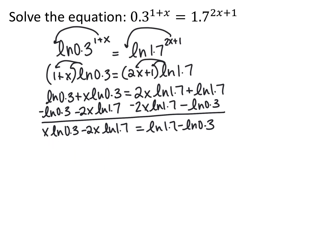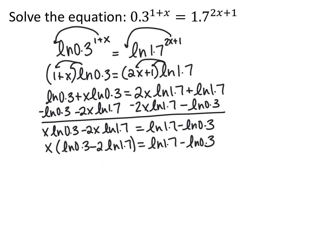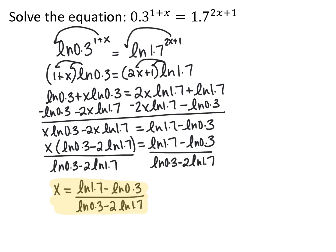On the left, I need a single coefficient times x so I can divide it away. Both terms have an x, so I factor x out, giving x times (natural log of 0.3 minus 2 times natural log of 1.7). This whole expression is just a number, so I divide both sides by it. The result is x equals (natural log of 1.7 minus natural log of 0.3) divided by (natural log of 0.3 minus 2 times natural log of 1.7). You could simplify with log properties, but I'll leave my answer like that.